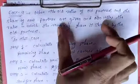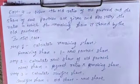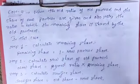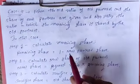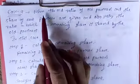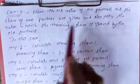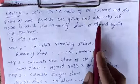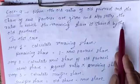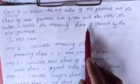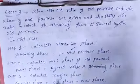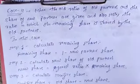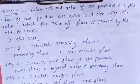This case you already studied in the NPSR ratio, but here it is a very different approach. When the old ratio of old partners and the share of new partner are given in the problem, and also they state the ratio in which the remaining share is shared by the old partners, three steps are involved here to calculate the sacrifice ratio.